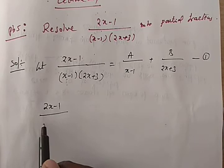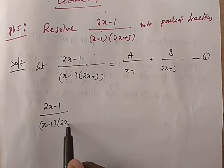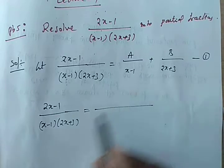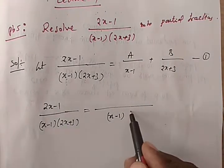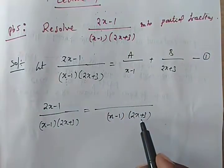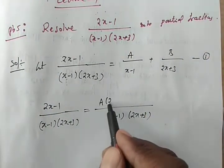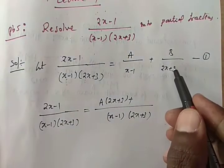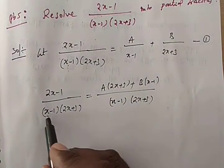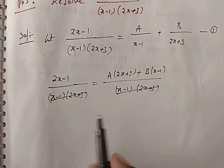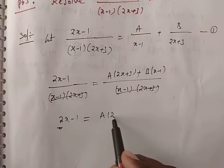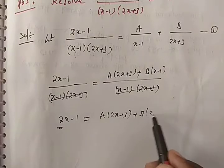So this implies (2x - 1) / [(x-1)(2x+3)] equals — the LCM of the two denominators is clearly (x-1)(2x+3). This denominator divided by (x-1): (x-1) cancels, remaining is (2x+3)·A. Plus the denominator divided by (2x+3): (2x+3) cancels, remaining is (x-1)·B. Both side denominators are the same, so we cancel them and write: 2x - 1 = A(2x + 3) + B(x - 1). Call this equation 2.